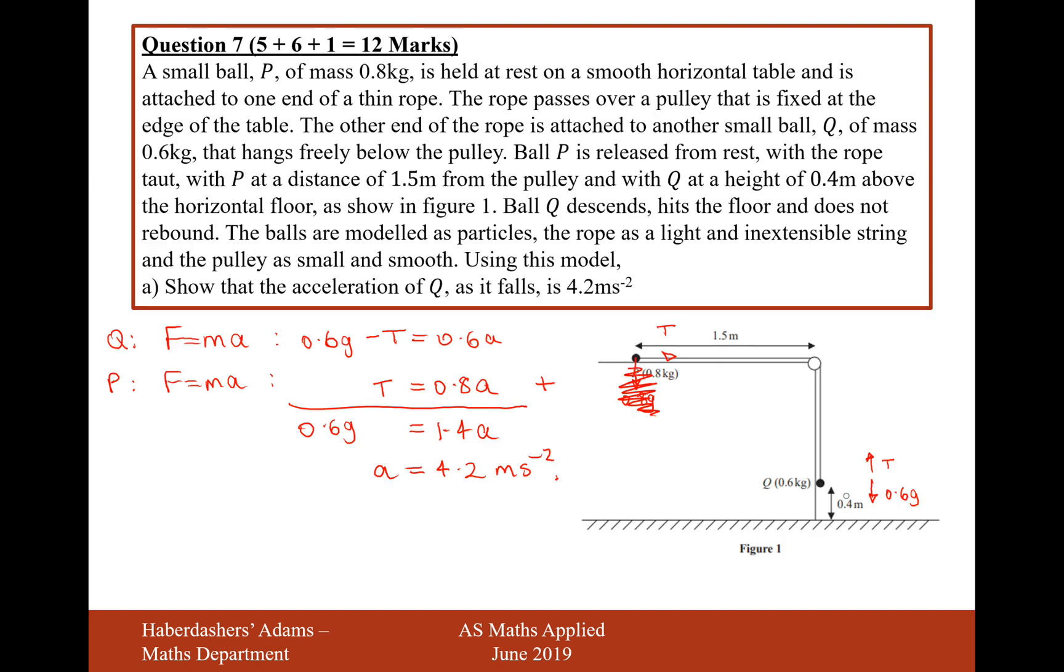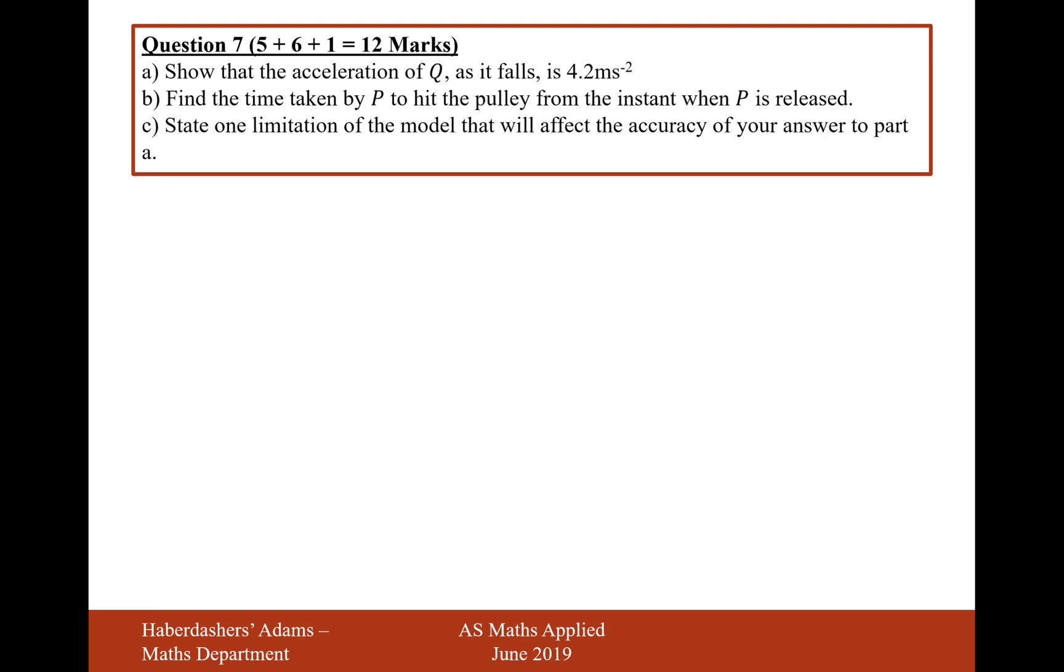So what's going to happen here is the particle Q is going to drop 0.4 metres. Particle P is going to move by 0.4 metres and then it's going to have picked up some speed up to that point. From that point onwards, it's then going to just travel with constant speed until it hits the pulley. So what we have to do first is for particle P, do a bit of a SUVAT for the first 0.4 metres. So S equals 0.4.